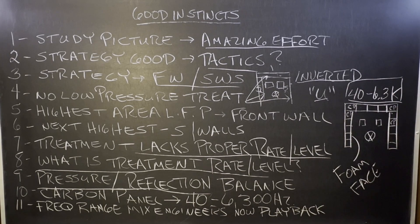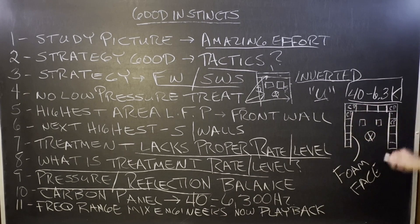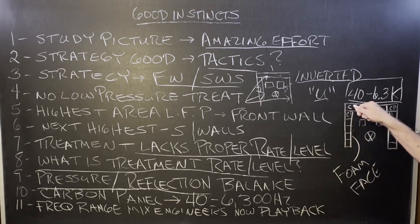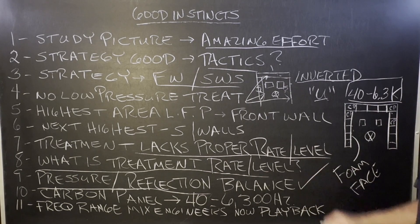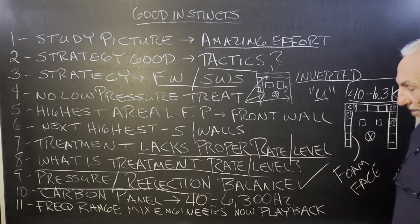Carbon panel along the sides, the front and the sides. Now the foam face deals with the reflection. The carbon technology on the inside deals with the pressure. So we have pressure and reflection management all in one product. That's the design of the carbon panel. That's what it's supposed to do.